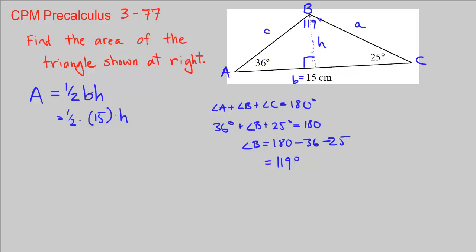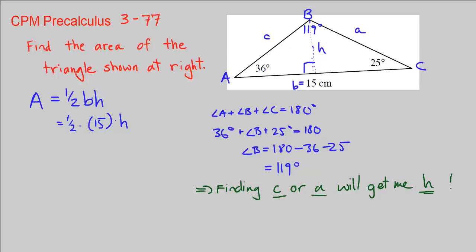Likewise I can say sine of 25 degrees is equal to h over a. So if I know a, I can find h easily. So I need to find side c or a to get the height. My strategy is to find side c or side a to get the height.